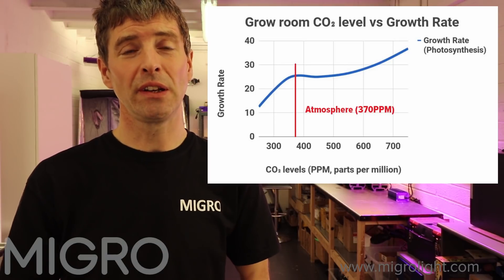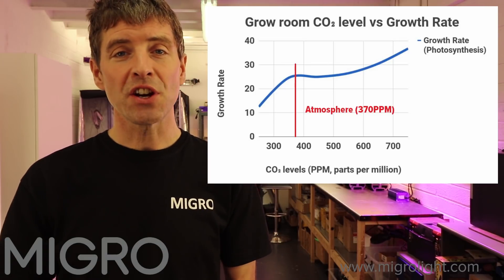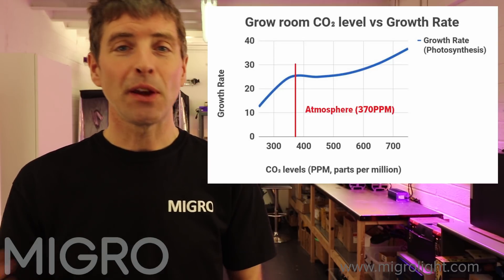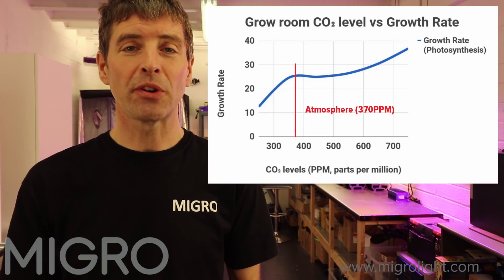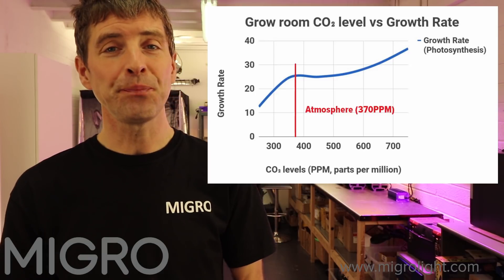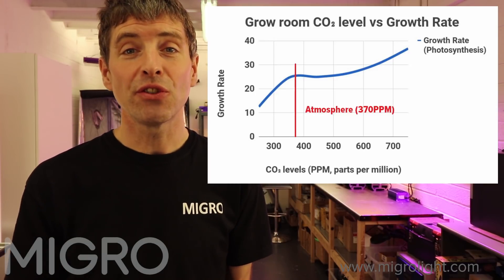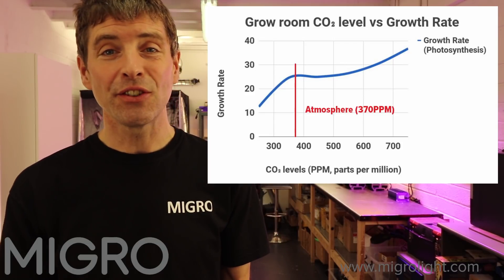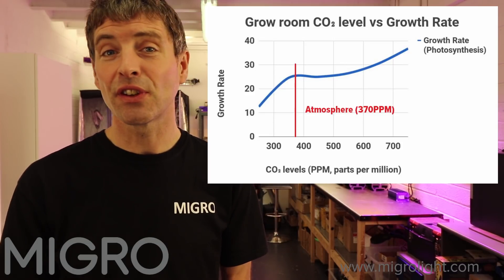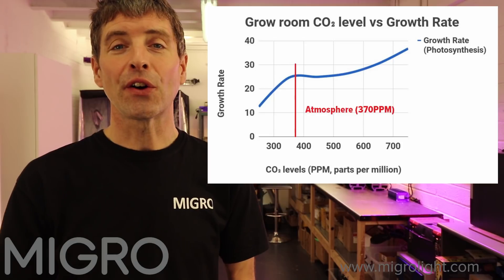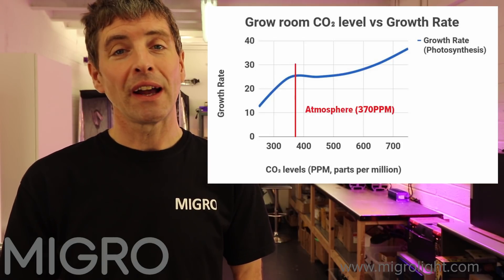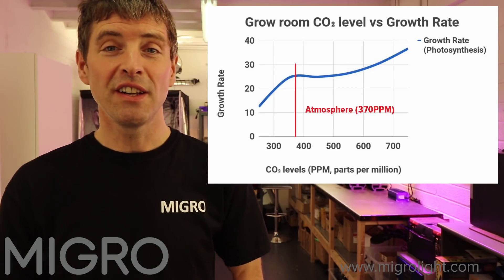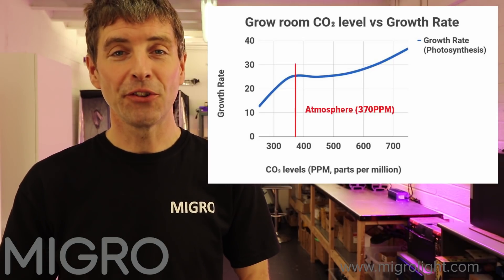There are a couple of ways of doing it. You can enclose the environment so that the air recirculates back into the grow room, and use a CO2 sensor along with some form of CO2 addition — such as CO2 bags, burners, or CO2 tanks — to artificially elevate the CO2 level in your grow room.